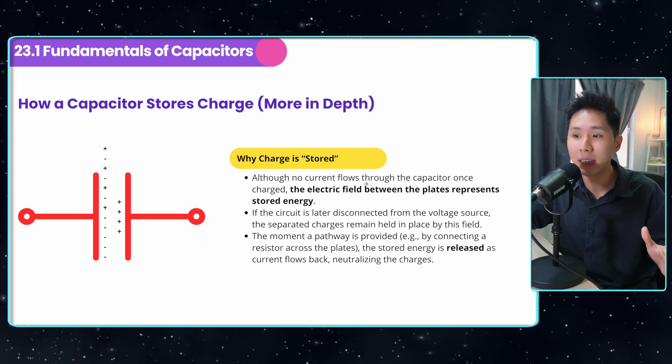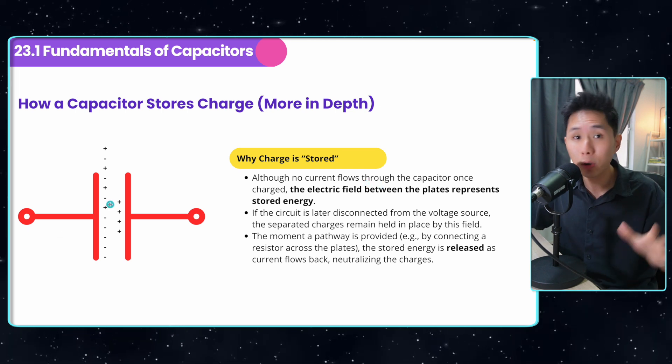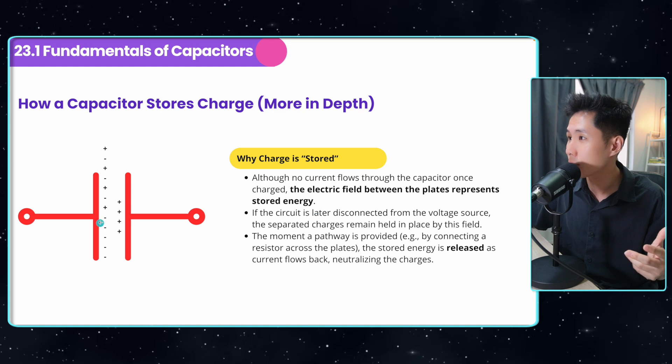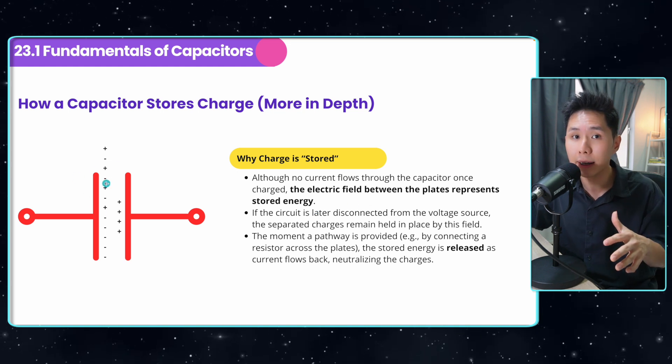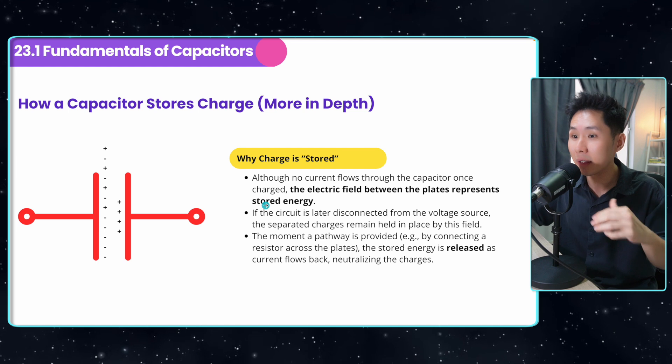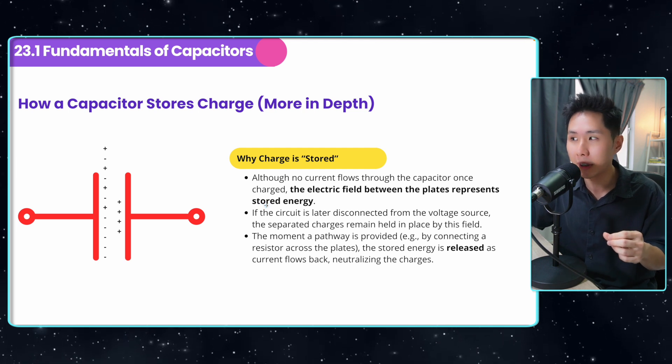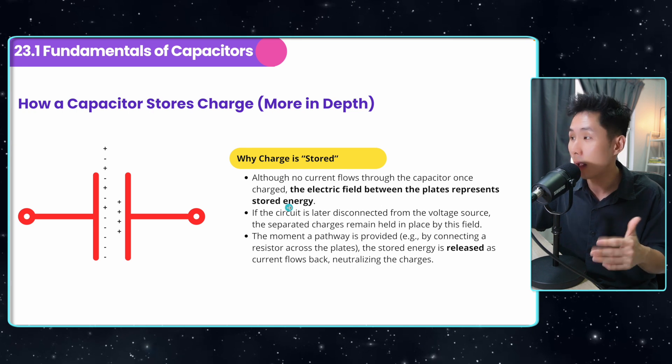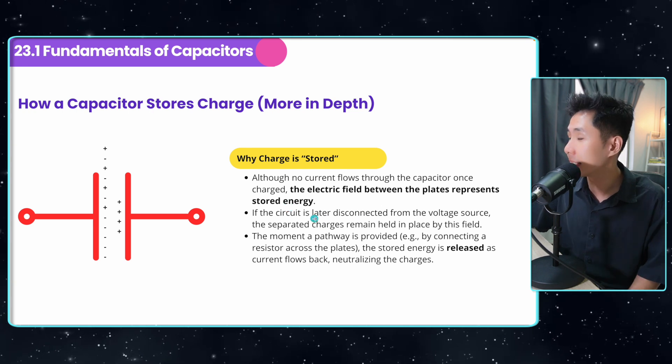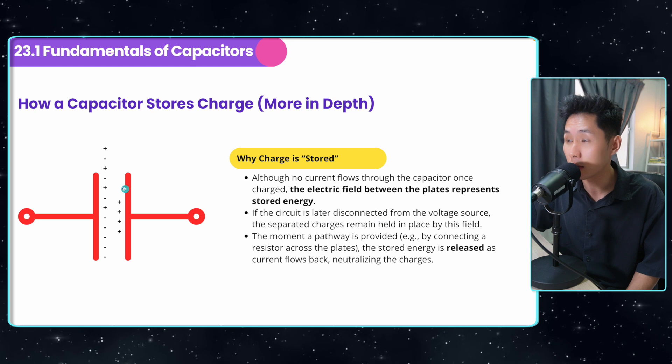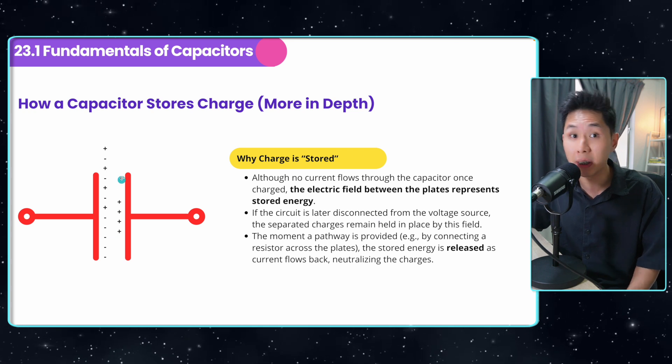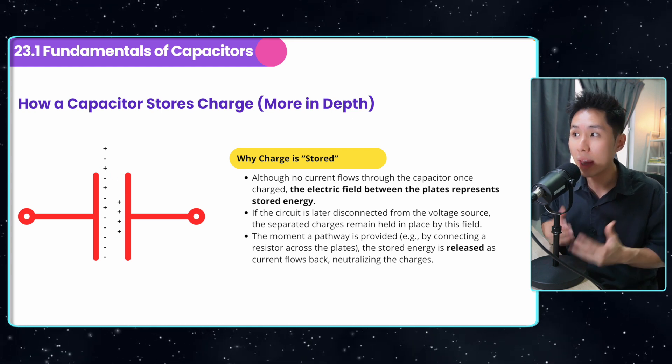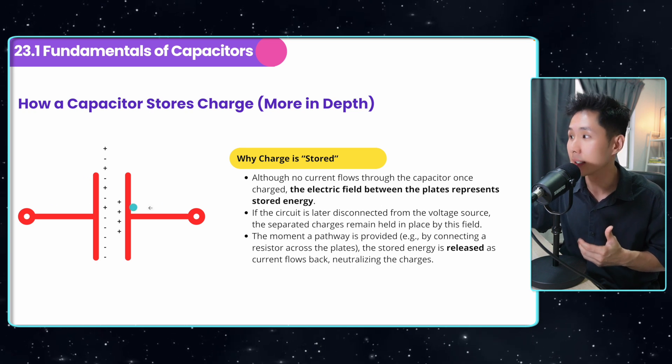The question you have might be, why is it storing charge? The electric field between the plates represents stored energy. Well, if you remember what we learned in the previous video, this is exactly what we learned, right? The energy is stored when you have an electric field. So if the circuit is later disconnected from the battery, the electric field will still be there.